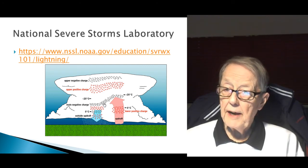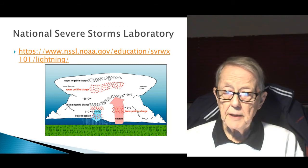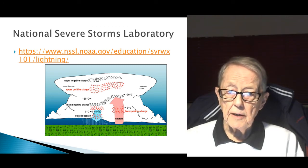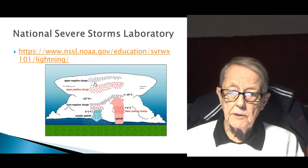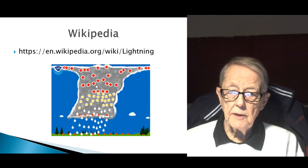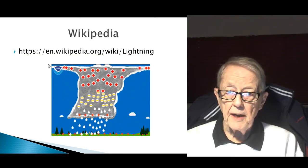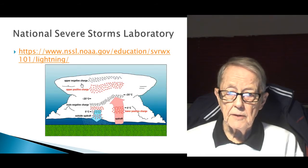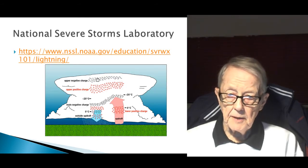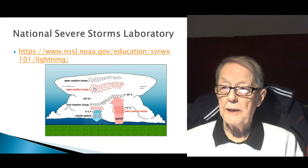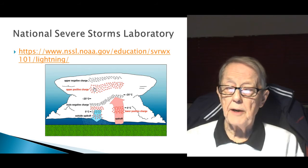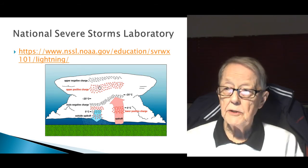But they both have layers, even though the previous one ends up with positive up by the anvil — this is what's called the anvil — this one has negative. Maybe this is their explanation of why lightning is so strange.